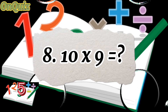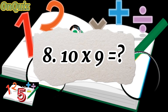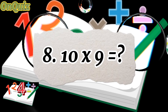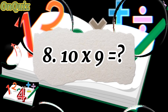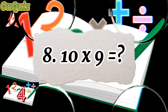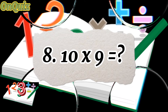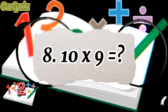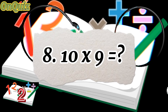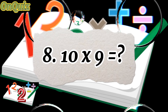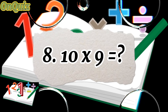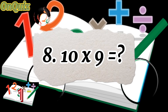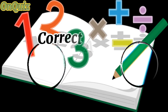Question 8. 10 times 9 equals. Correct answer: 90.